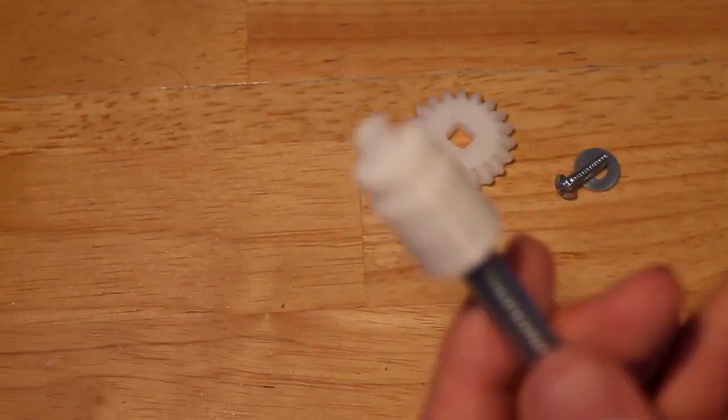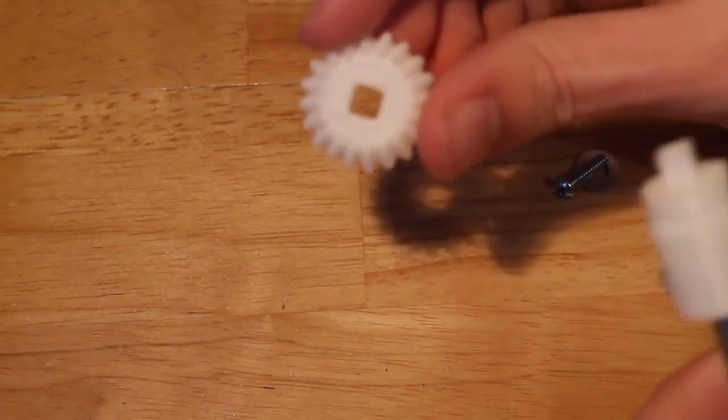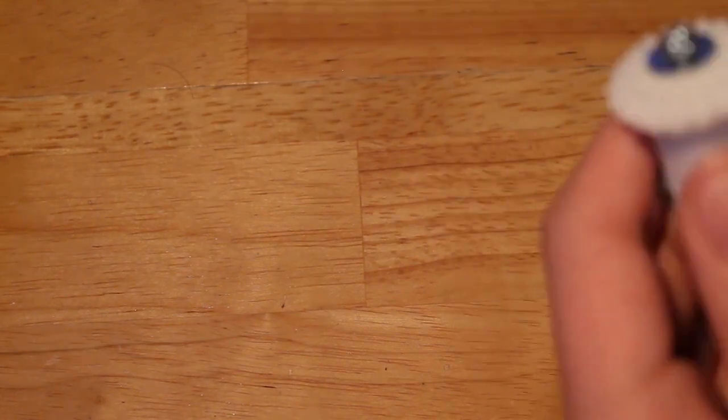Next you're going to take your threaded rod assembly and slide on the gear with the square hole on top, and put the washer and the nut through everything, just like that.